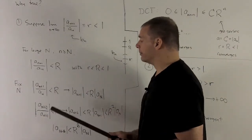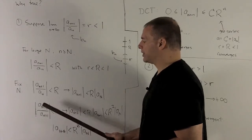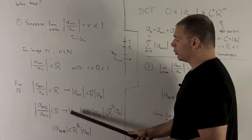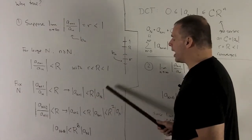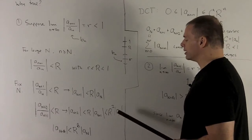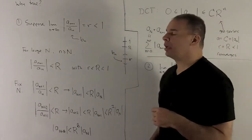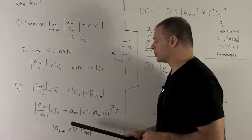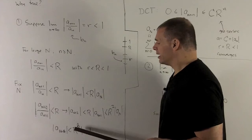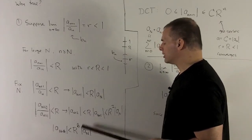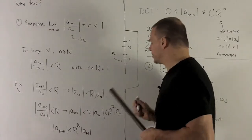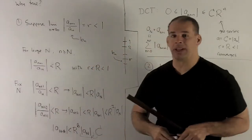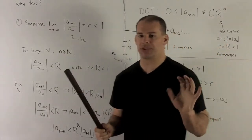With capital N fixed, we churn out what that inequality keeps telling us. The absolute value of a sub N+1 over a sub N is strictly less than R, so pushing a sub N to the other side gives us that inequality. For the next step, a sub N+2 over a sub N+1 is strictly less than R, and using the first inequality we get strictly less than R squared times the absolute value of a sub N. Going to a sub N+k, we unspool this k times and find the absolute value of a sub N+k is strictly less than R to the k times the absolute value of a sub N.